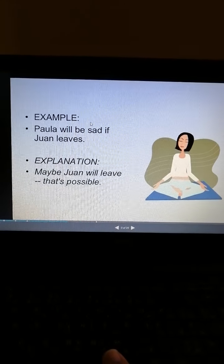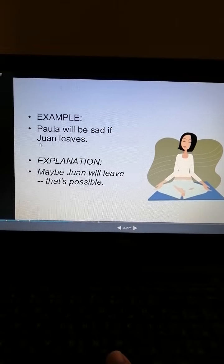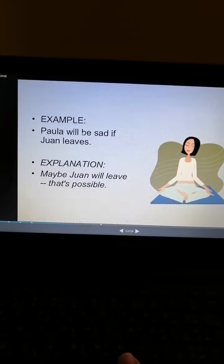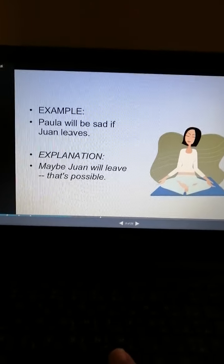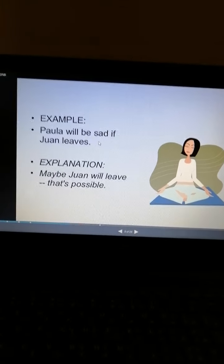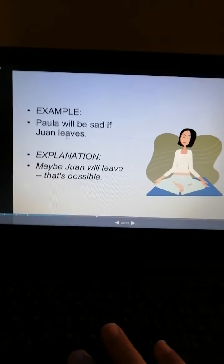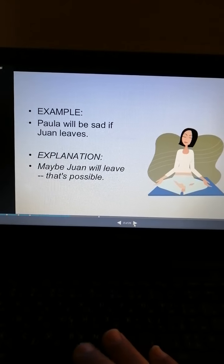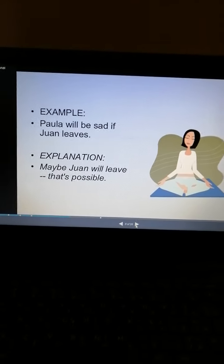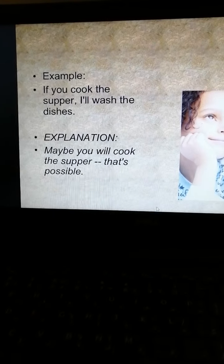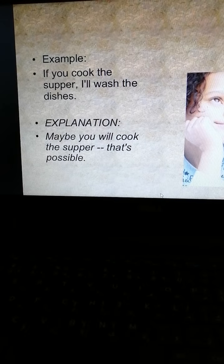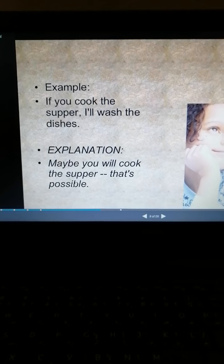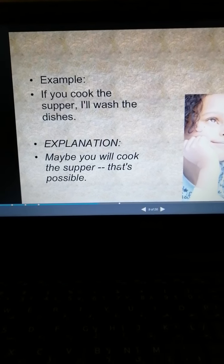Next example: 'Paula will be sad if Joan leaves.' We start here with the main clause: 'Paula will be sad' — 'will' with verb infinitive. Then 'if Joan leaves' — Joan is singular, so the verb takes 's'. Explanation: maybe Joan will leave — that's possible, maybe she will travel or something else. Another example: 'If you cook the supper, I will wash the dishes.' Explanation: maybe you will cook the supper — that's possible.